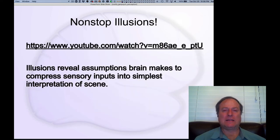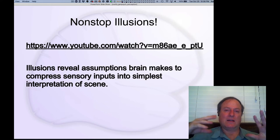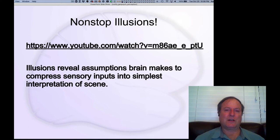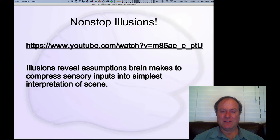The bottom line is that the illusions we've been looking at reveal the assumptions being made in those lower levels of the visual system and show us how our brain creates this very simple interpretation of the world, kind of automatically and effortlessly. This link is from OK Go — I recommend you click on it. It gives you at least two to five minutes of non-stop illusions, one right after another, along with a jazzy soundtrack.